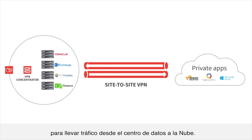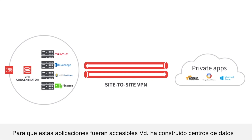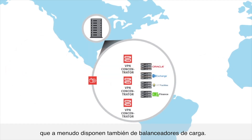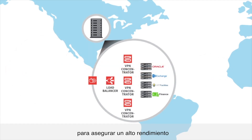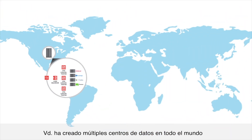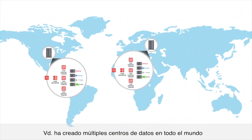As you move apps to the cloud, you may also have to build a site-to-site VPN tunnel to take traffic from the data center to the cloud. To make these apps reachable, you've built data centers that often feature load balancers as well.